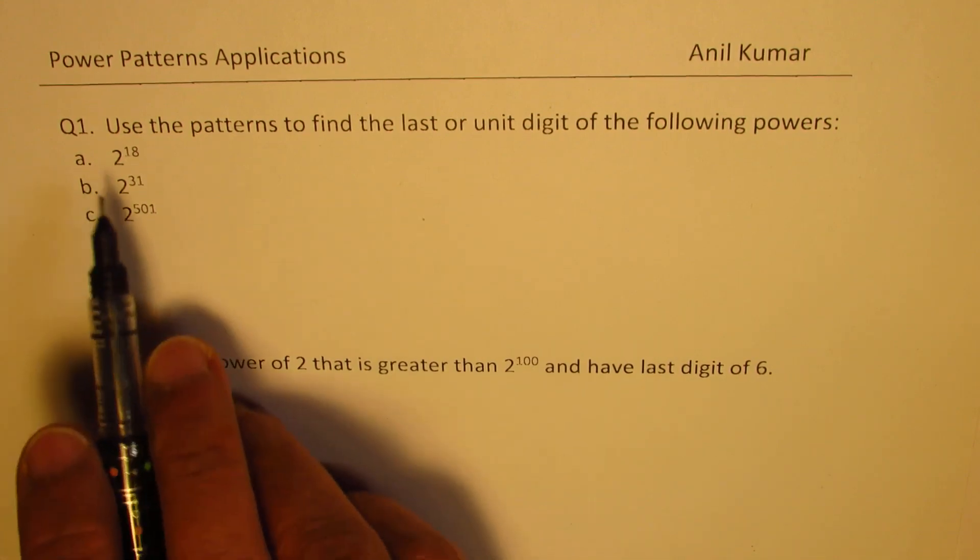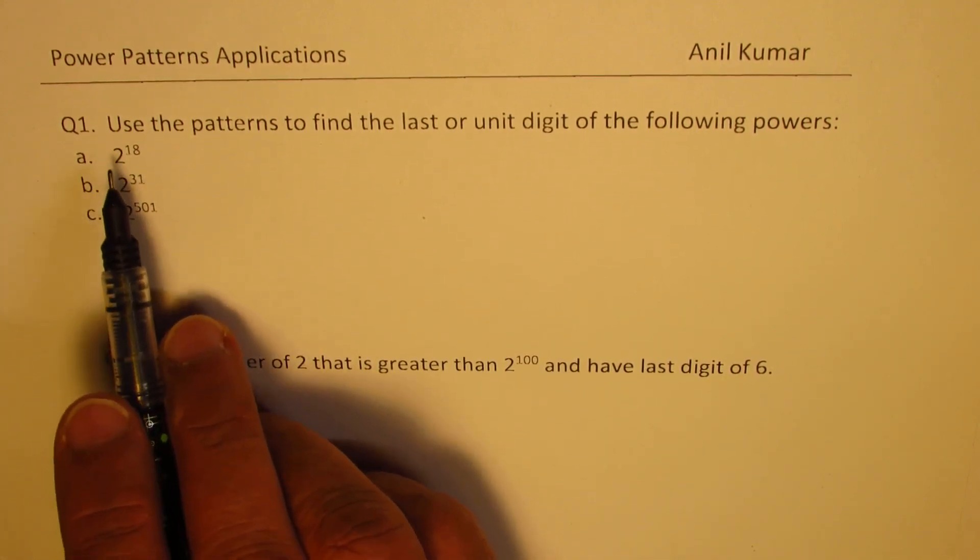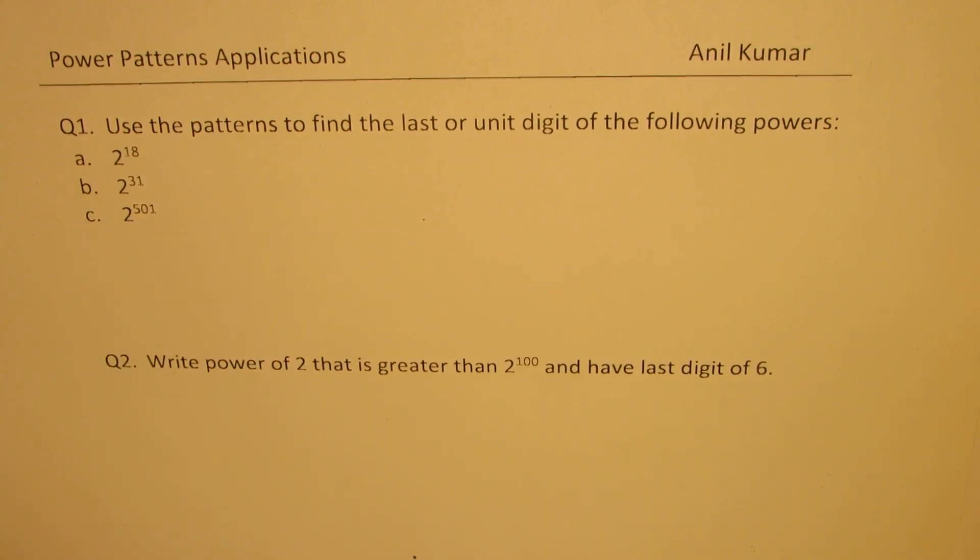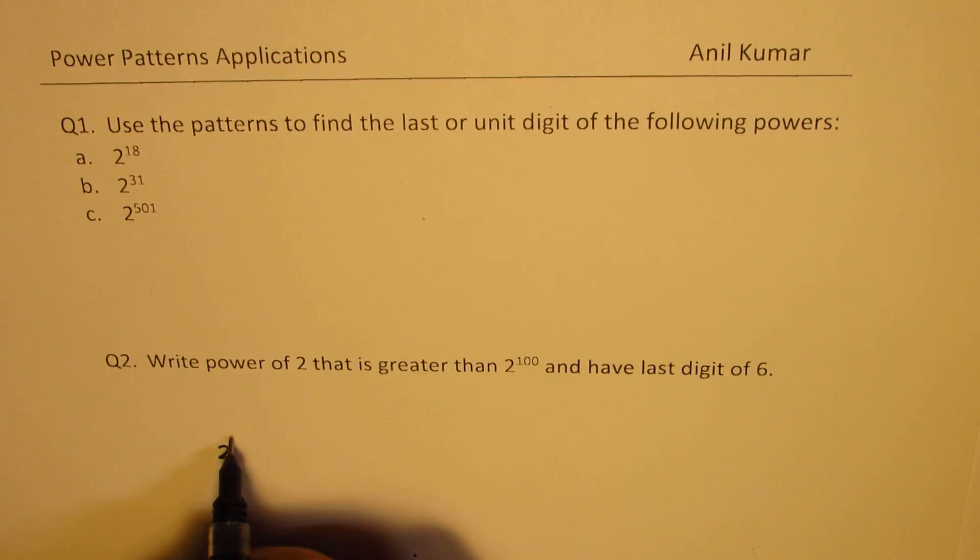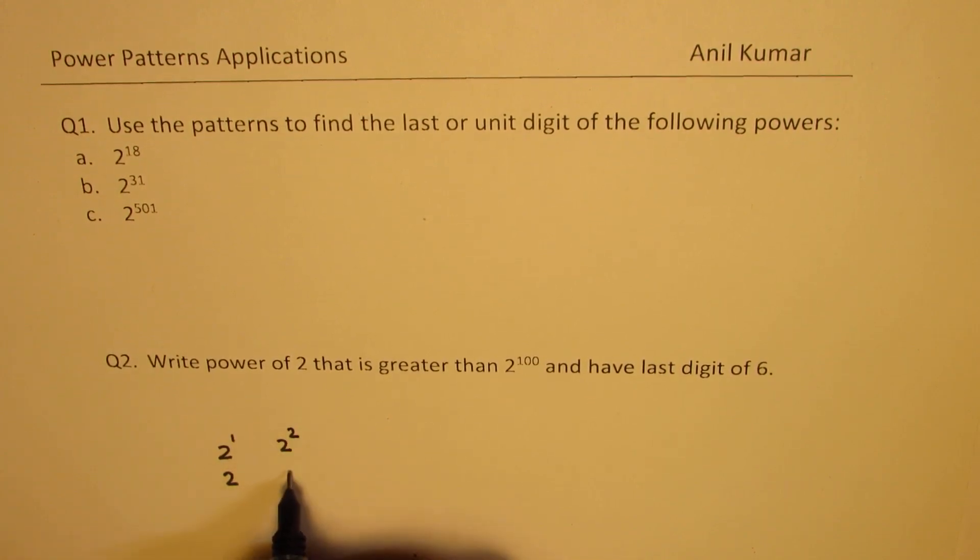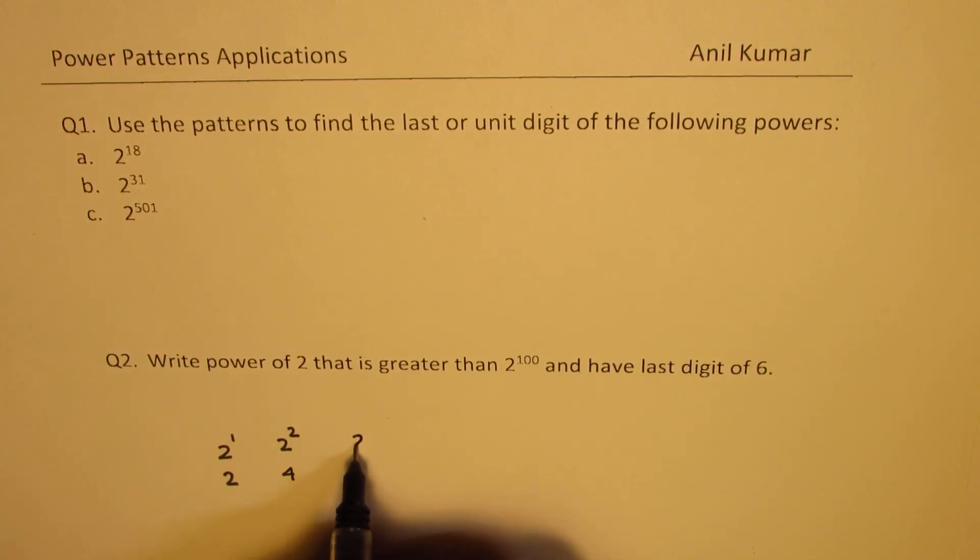So, to get the pattern, let us write down a few powers of 2 and see what they are and what kind of pattern we expect. So, if I write 2 to the power of 1, we know this is equal to 2. If I write 2 to the power of 2, we get 4. 2 to the power of 3 is 8. 2 to the power of 4 is 16.